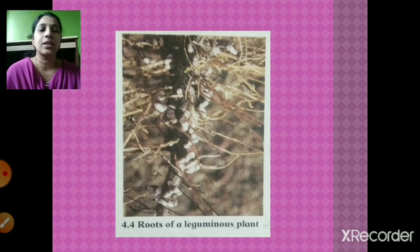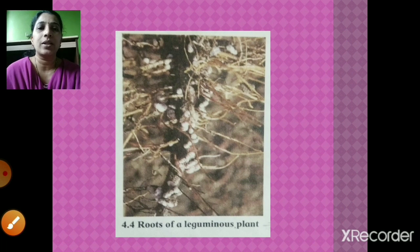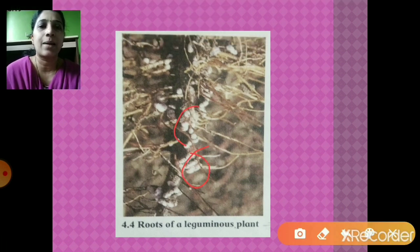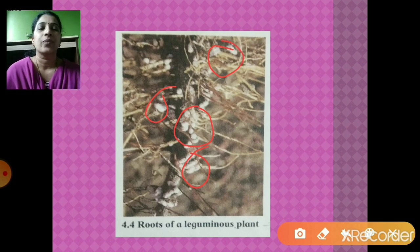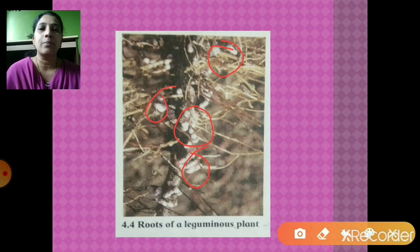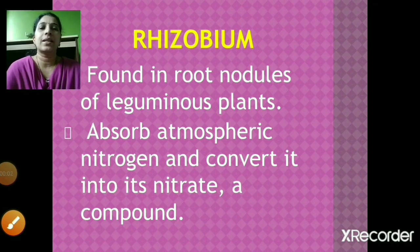Rhizobium is found in the root nodules of leguminous plants such as pea, peanut, and moth beans. Root nodules are small white lumps on the roots. These microorganisms absorb atmospheric nitrogen and convert it into nitrates — a compound of nitrogen.